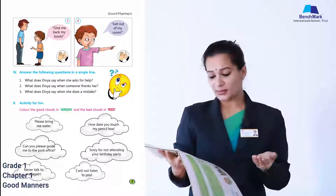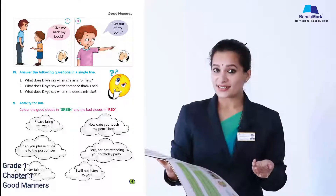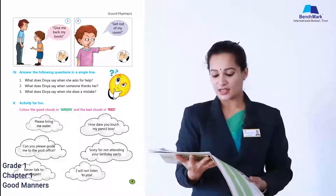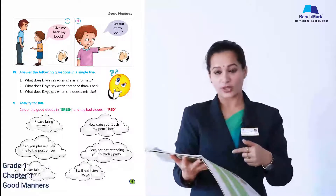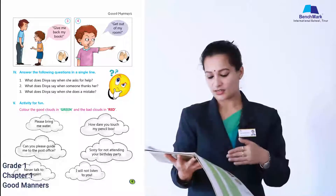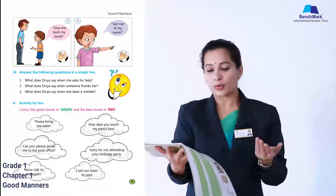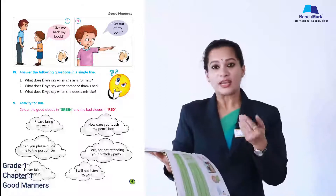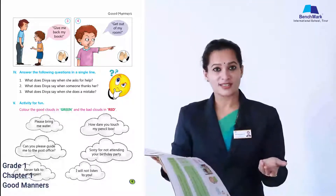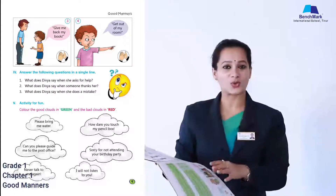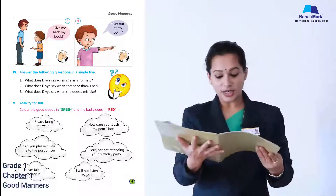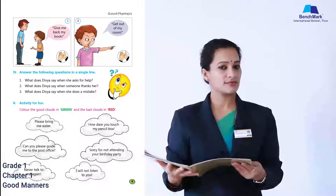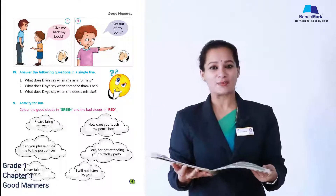First cloud: 'Please bring me water, please' — that is good, so color it green. Second cloud: 'Can you please guide me to the post office?' — that is polite, so color it green. Third cloud: 'Never talk to me again, I don't want to hear from you' — that is bad, so color it red.